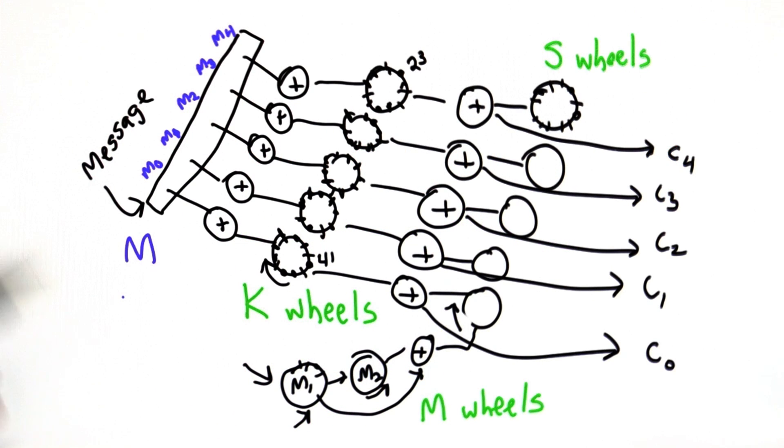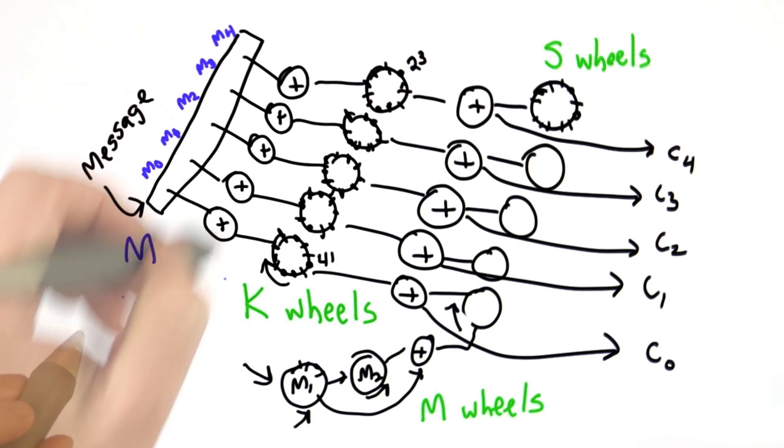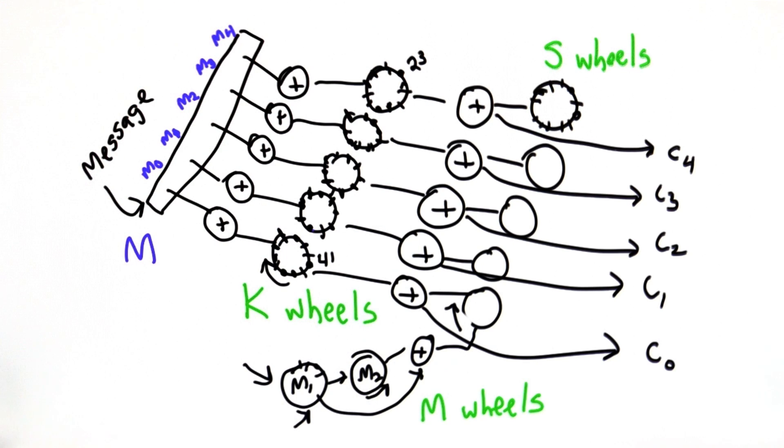The message is text in the language, and in this case it's in the language German. These are the k wheels. Each wheel rotates with every character, and they have pins around the wheels, deciding if it's a 0 or a 1.